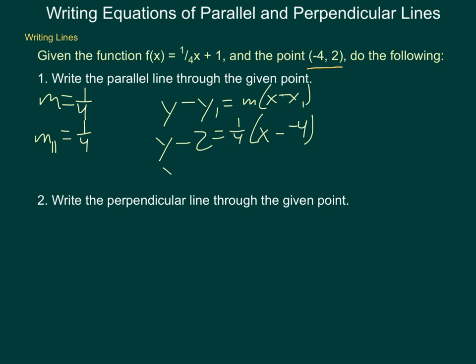Or in other words, y minus 2 equals 1/4 of x plus 4. That is a valid equation, but if we want to go further, we can distribute and simplify. So we get y minus 2 equals 1/4 of x plus 1. Adding the 2 to each side, y equals 1/4 x plus 3.